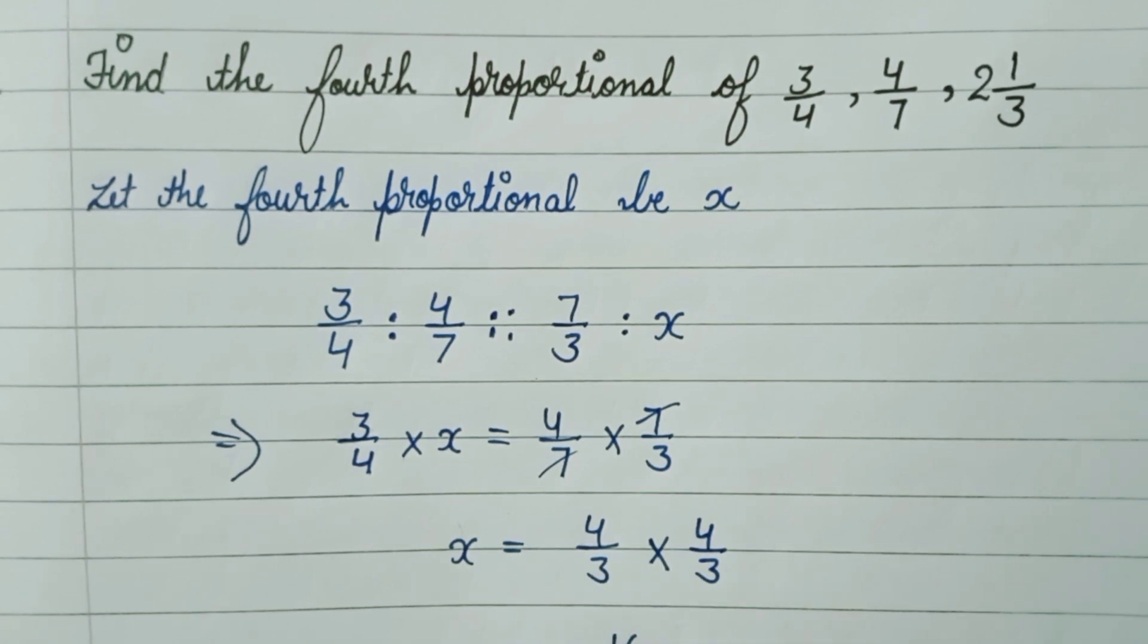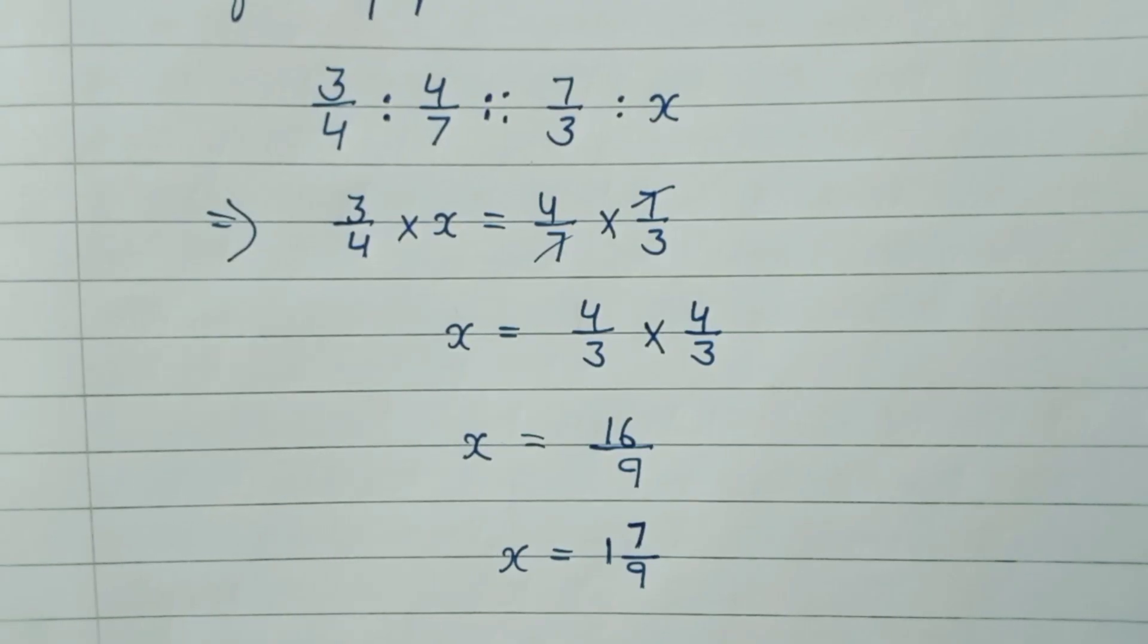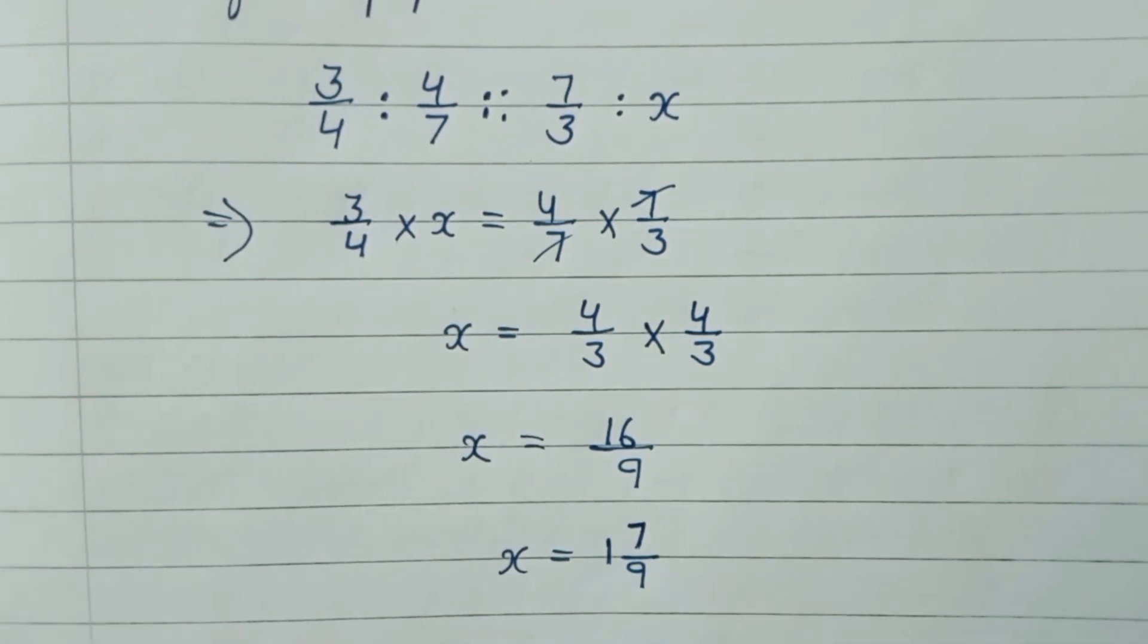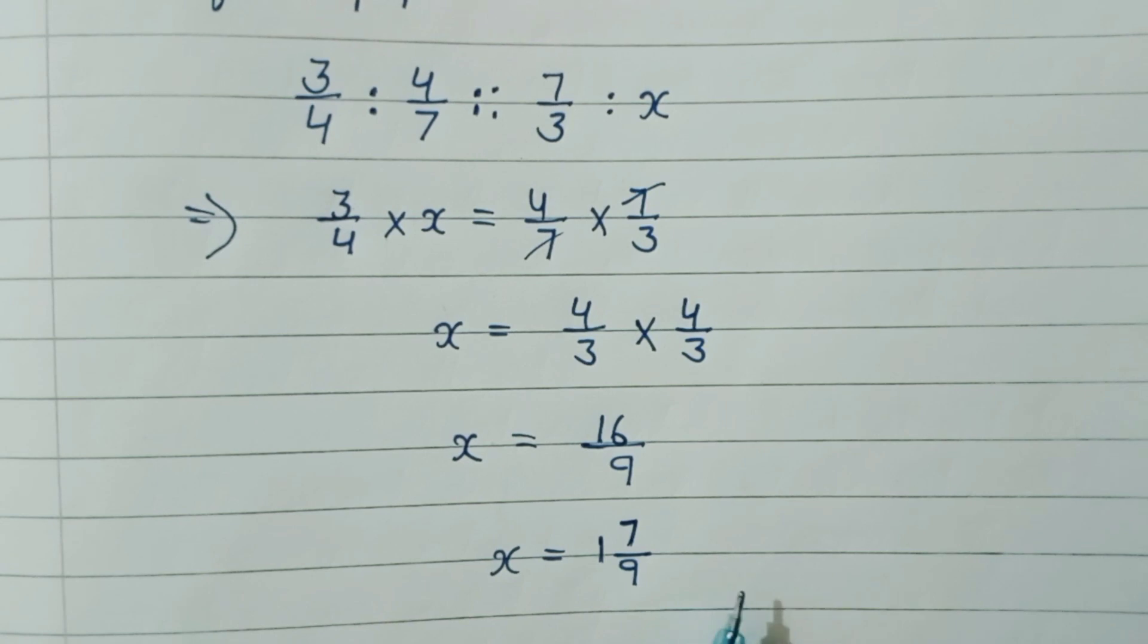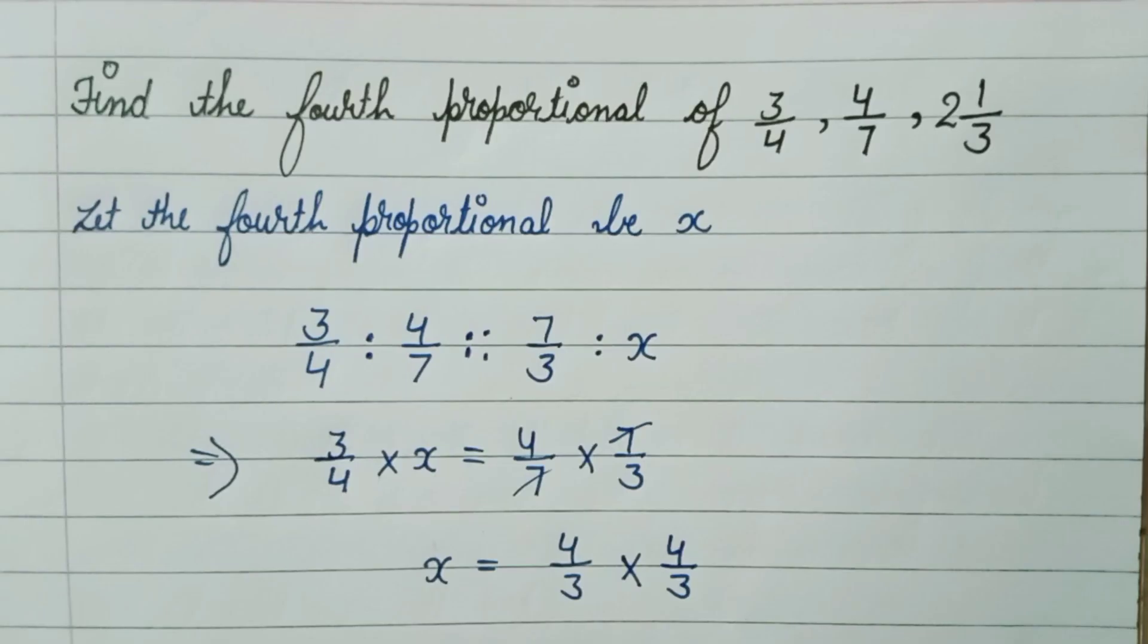4 into 4, we get 16, and 3 into 3, we get 9. We can write this in mixed fraction form, which is 1 7/9. So this is the fourth proportional, and this is the answer.